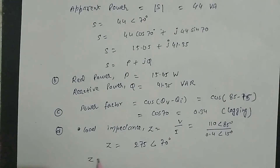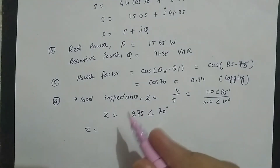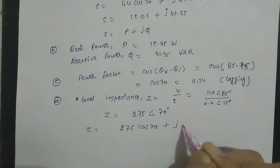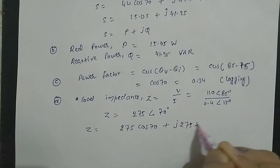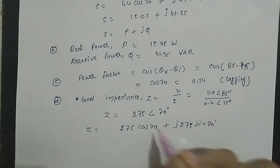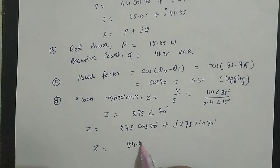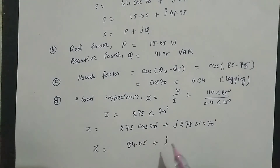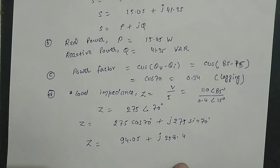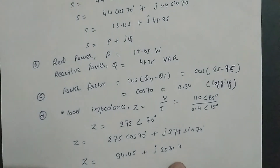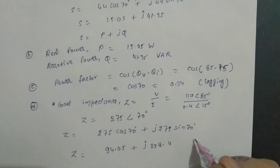Z = 275∠70° को rectangular form में change करते हैं: Z = 275cos70° + j·275sin70° = 94.05 + j258.4 ohm। यहाँ भी J का sign positive है, तो load inductive है — जो complex power से भी confirm होता है।